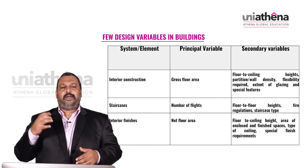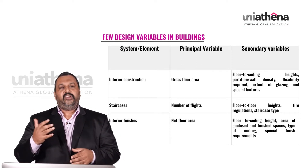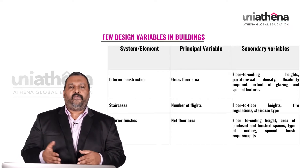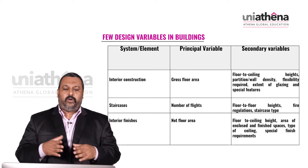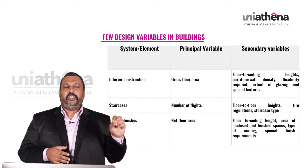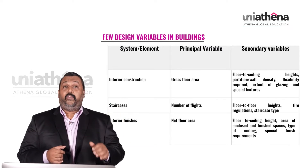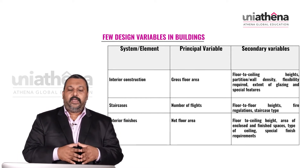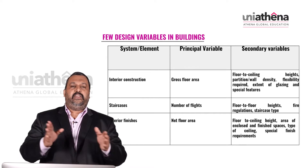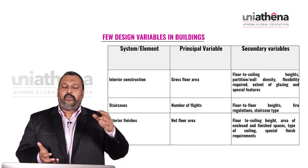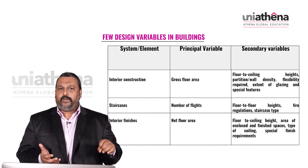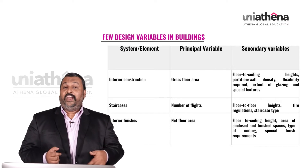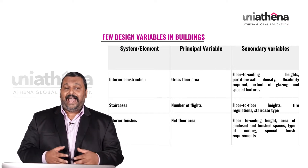For interior construction, the principal variable is going to be the gross floor area (GFA). Secondary variables are floor-to-ceiling height, partition wall density, flexibility required, extent of glazing, and special fixtures required as part of the interior construction.